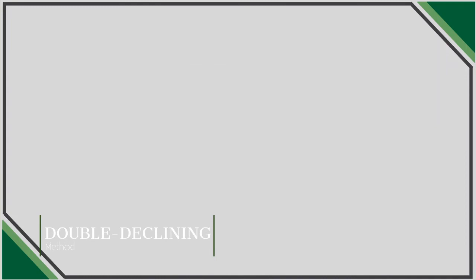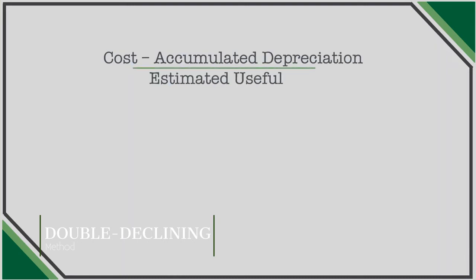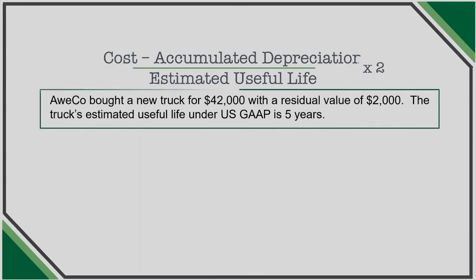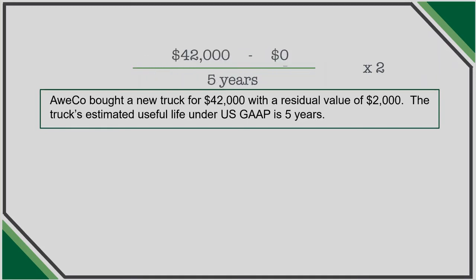The next form of depreciation is double declining balance. Under double declining balance, the cost of the asset less accumulated depreciation is divided by the estimated useful life and then multiplied by 2. Using the same truck example, the cost is $42,000 with no accumulated depreciation in year one. We don't consider residual value until the very end. Dividing $42,000 by 5 years and multiplying by 2 gives us $16,800 of depreciation expense in year 1.